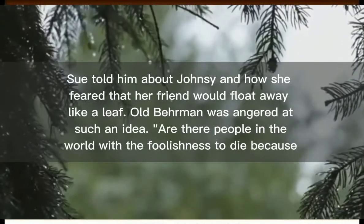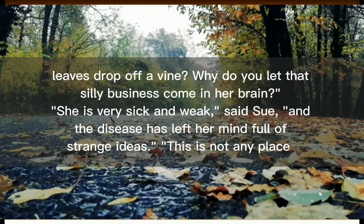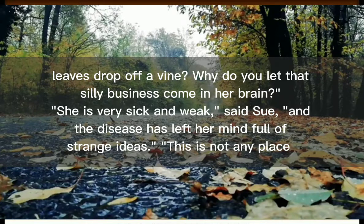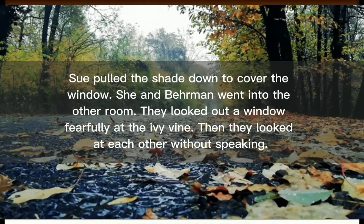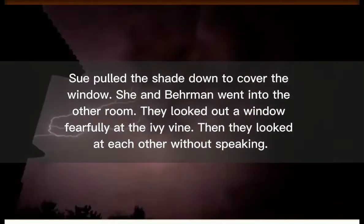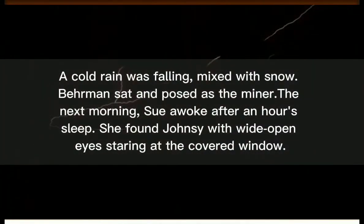He was a fierce little old man who protected the two young women in the studio apartment above him. Sue found Berman in his room. In one corner was a blank canvas that had been waiting 25 years for the first line of paint. Sue told him about Jansi and how she feared that her friend would float away like a leaf. Old Berman was angered at such an idea. 'Are there people in the world with the foolishness to die because leaves drop off a vine? Why do you let that silly business come in her brain?'